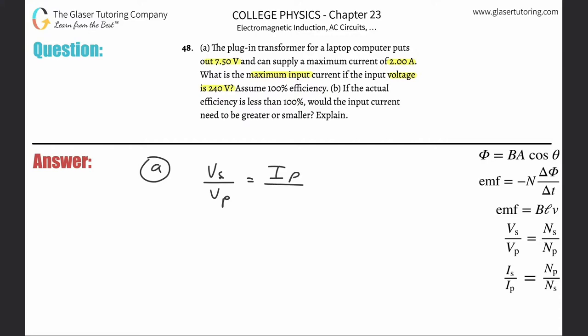It's asking us what is the maximum input current. Input always means primary, so that's what I need to find. Therefore I need to know all the other three things, and we should.